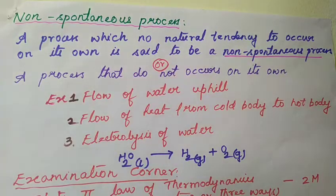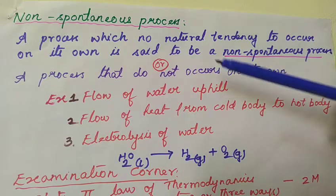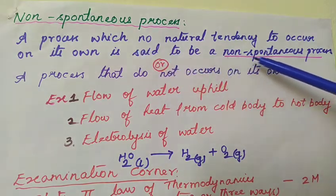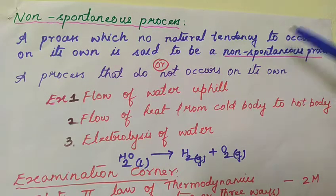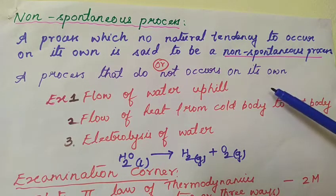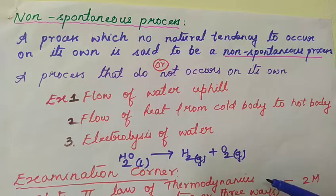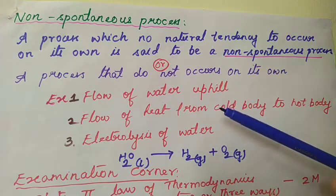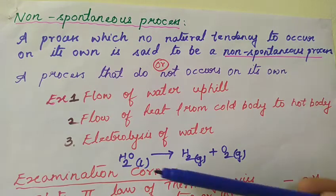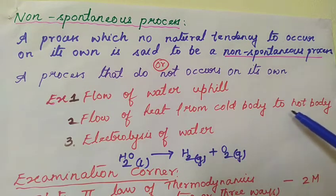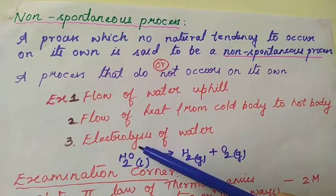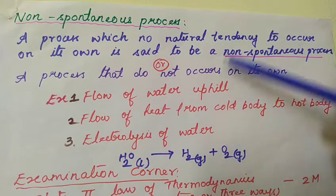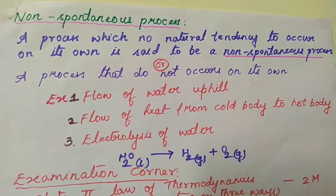A non-spontaneous process is one which has no natural tendency to occur on its own. In simple words, a process that does not occur on its own is known as a non-spontaneous reaction. Examples: flow of water uphill — water cannot flow uphill, it always flows downhill; flow of heat from a cold body to a hot body is quite impossible; and electrolysis of water is a non-spontaneous reaction.